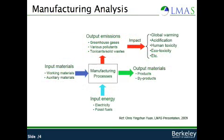Resource flow of manufacturing processes can be analyzed like this chart. For example, a plastic injection molding machine melts input material and makes a designed shape by consuming electricity. Some plastics can be wasted as scrap and various greenhouse gases can be produced. Some analyses get much more complex through related processes and components.